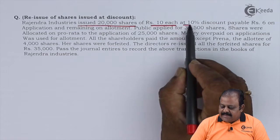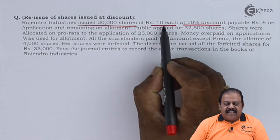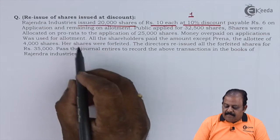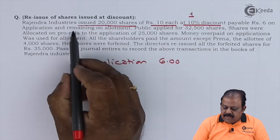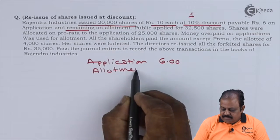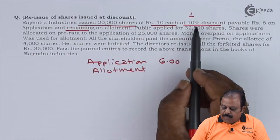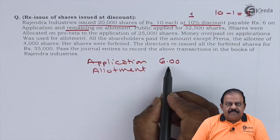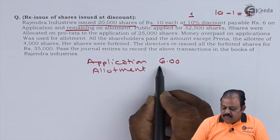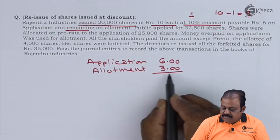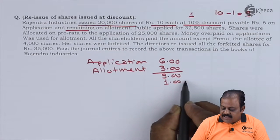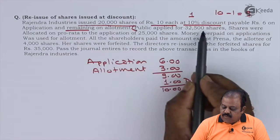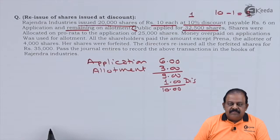The share has a nominal value of ₹10. At 10% discount, that means ₹1 discount — so we take ₹9 per share. ₹6 is payable on application, and the remaining ₹3 is payable on allotment. We also adjust ₹1 discount at the time of allotment, making ₹10 total.